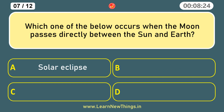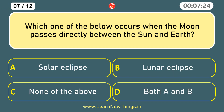Which one of the below occurs when the moon passes directly between the Sun and Earth? Solar eclipse.